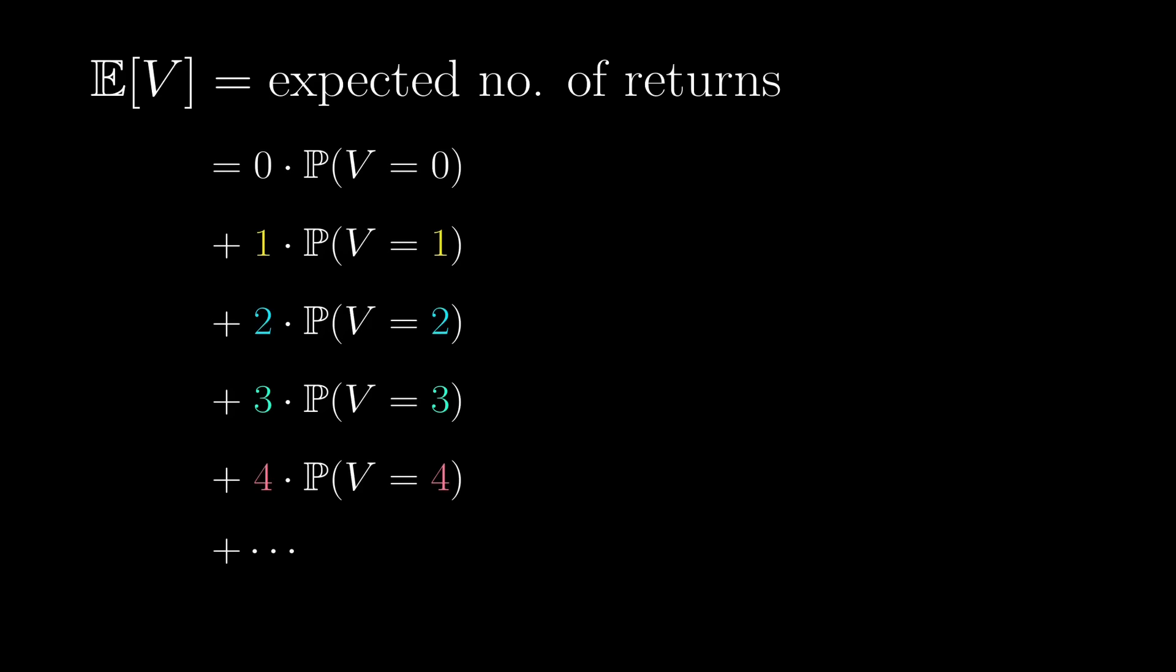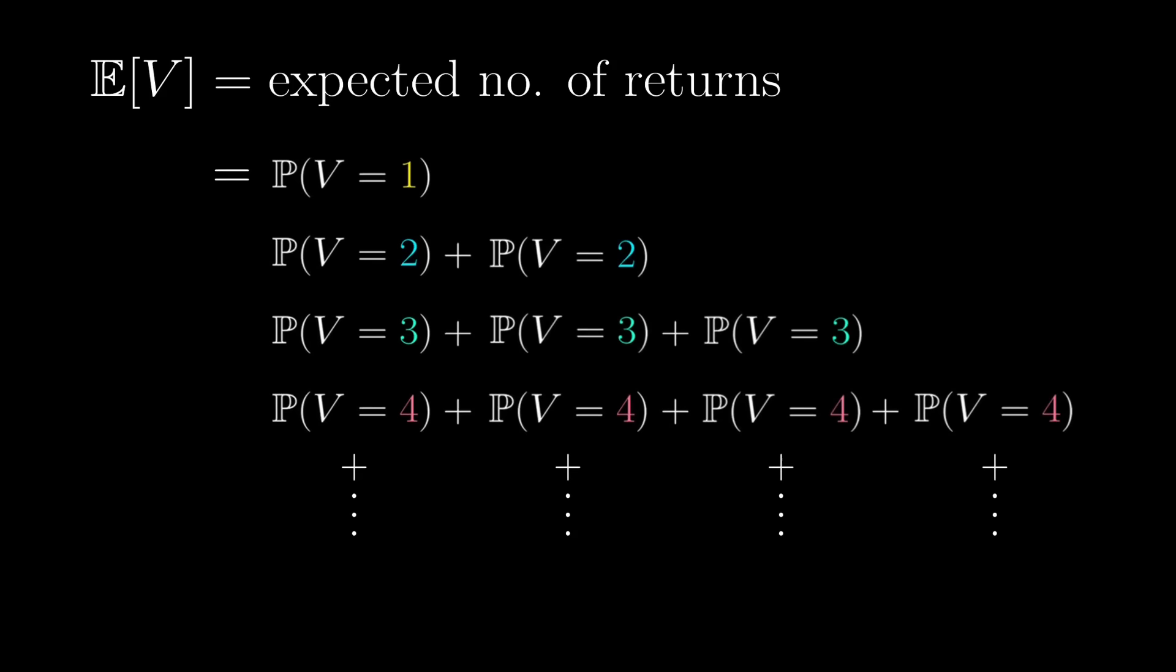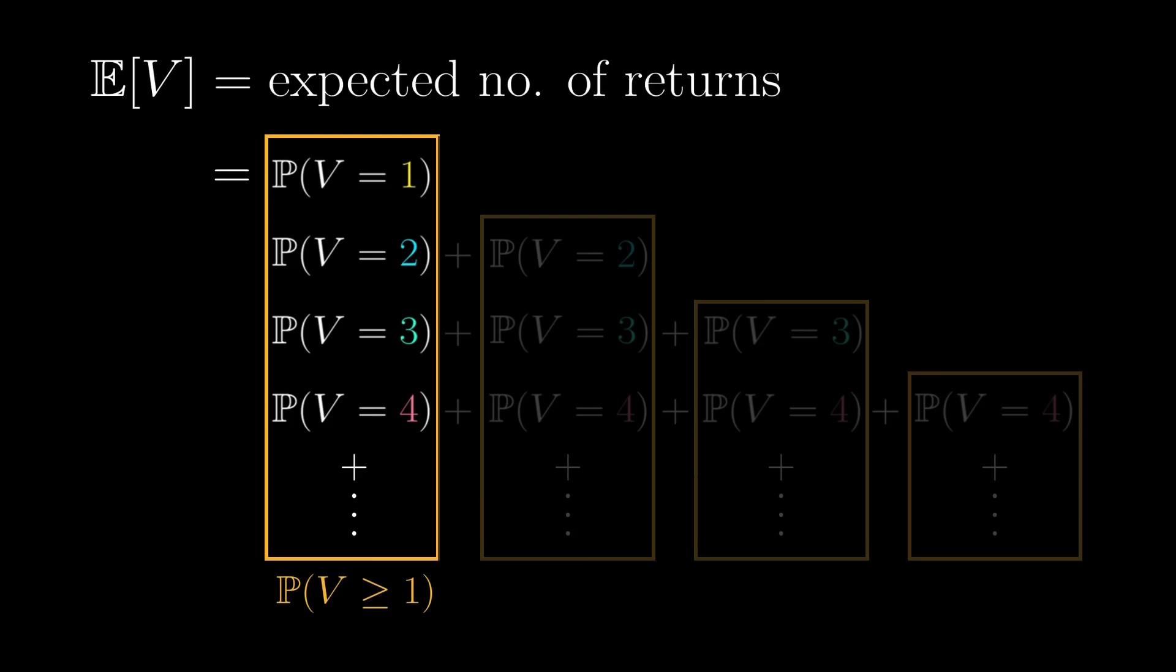But what if we write, for instance, this 2 times probability as actually the sum of two copies, and also do this similarly for the other terms in this sum? Then instead of summing these row by row, we can sum these column by column. For the first column, it is exactly the probability that V is at least 1. Similarly, the next column gives the probability that V is at least 2, and so on.